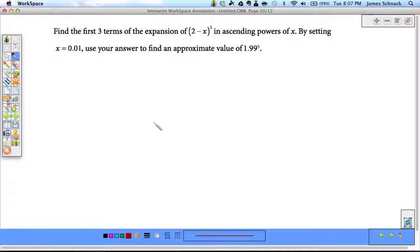So, let's expand this and then substitute 0.01 in for the x. So, here we go. 5 choose 0. And it's saying we're going to use the first three terms to approximate this.